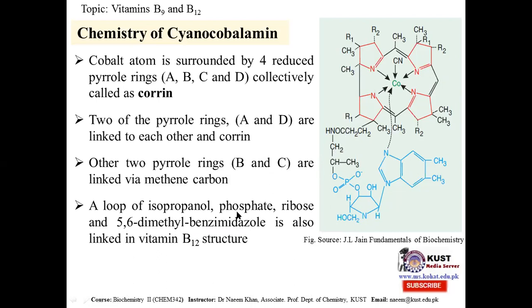The side chain includes isopropanol linked to phosphate, linked to ribose, and then 5,6-dimethylbenzimidazole — this loop is also linked to the cyanocobalamin ring system. Overall, cyanocobalamin has a complex structure with cobalt at the center, four corrin rings, two rings linked directly and two linked via methylene groups, plus the 5,6-dimethylbenzimidazole side chain loop.